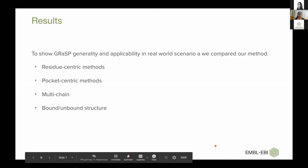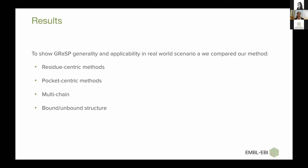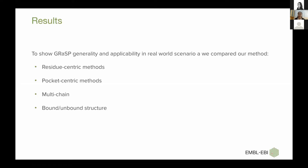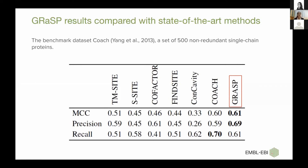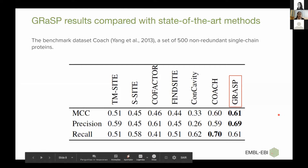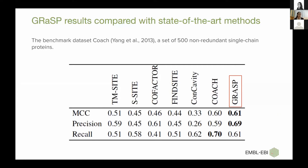GRASP was also compared with pocket-centric methods. We used GRASP to predict binding sites for multiple chain protein structures and also for protein structures in the bound and unbound state. In this first experiment, GRASP was compared with six other residue-centric methods using a benchmark dataset of 500 non-redundant single chain proteins. These methods use MCC, the Matthews correlation coefficient, to evaluate predictors.